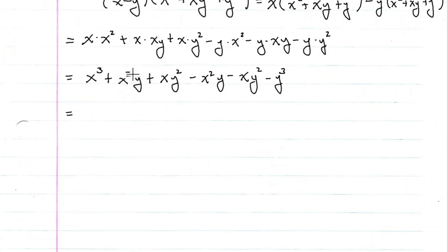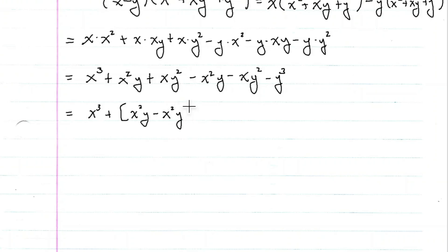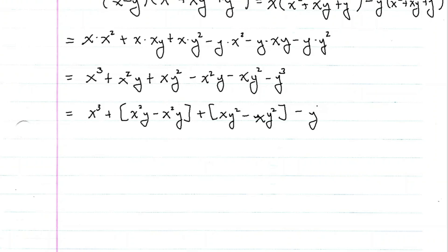Now we need to see if there are any like terms. We have x squared y and minus x squared y. So we have x cubed, plus the combination of x squared y minus x squared y. Then we have xy squared and minus xy squared — we'll group these two together, also using the commutative property: xy squared minus xy squared. And then finally we're left with minus y cubed.